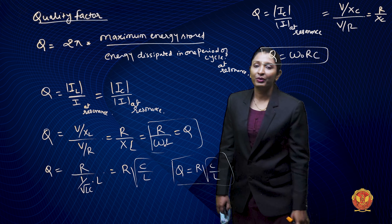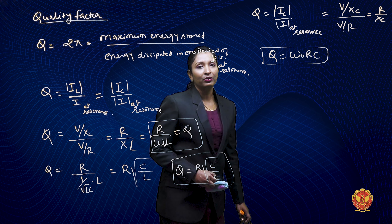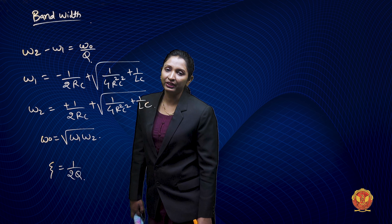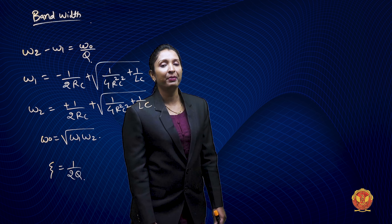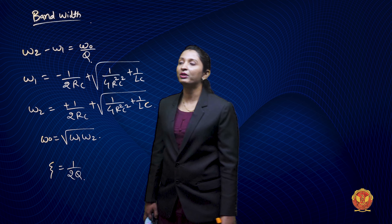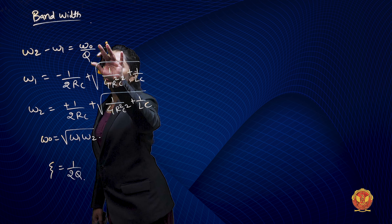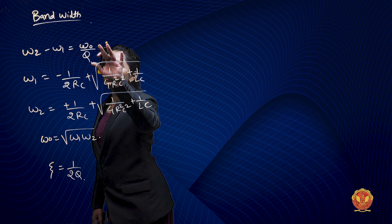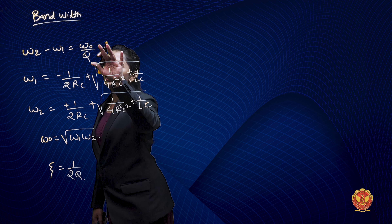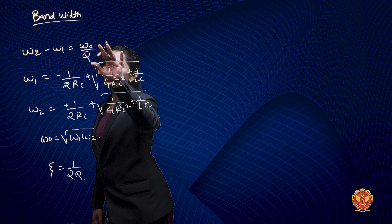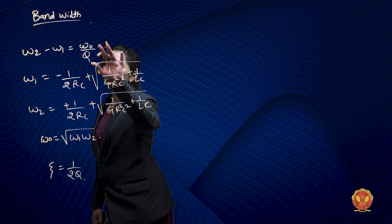If we look here, Q is equal to IC by I at resonance. I can write this as (V by XC) divided by (V by R), which is equal to R by XC. Since XC is 1 upon ωC, Q is equal to ω₀RC. This expresses Q in terms of R, C, and ω₀, and alternatively in terms of ωL, ω₀, and R.